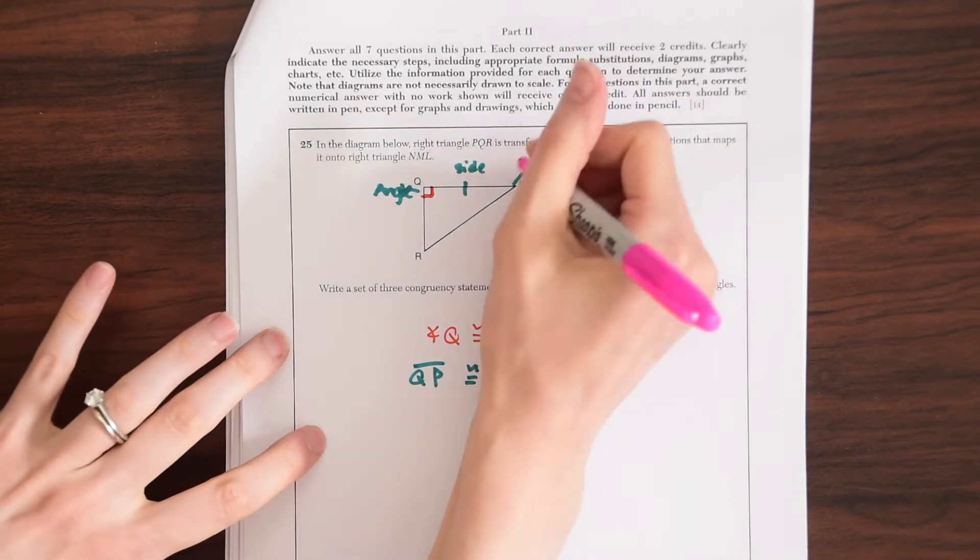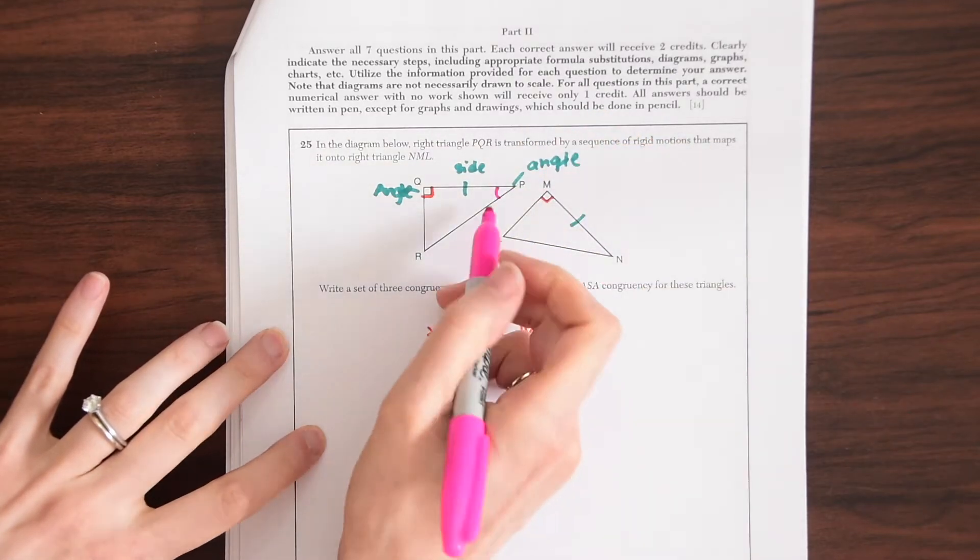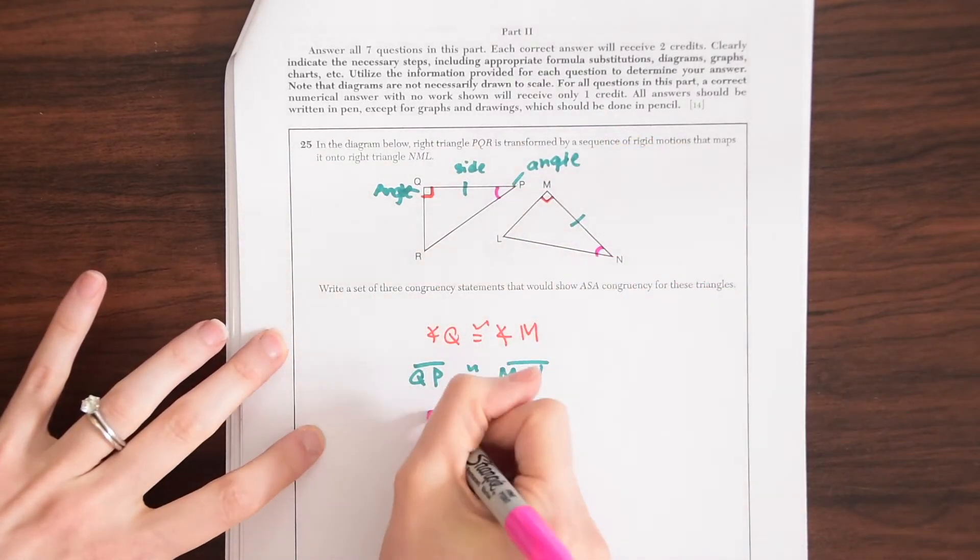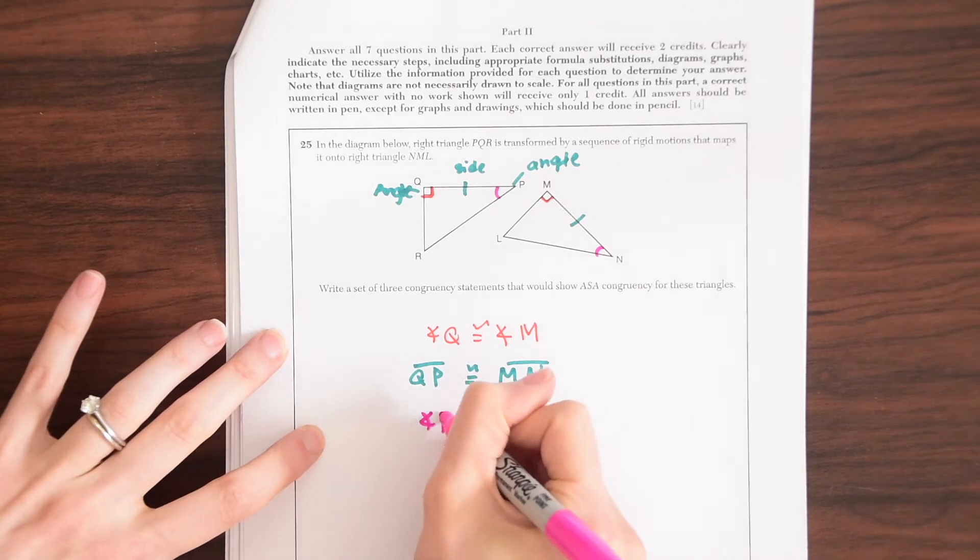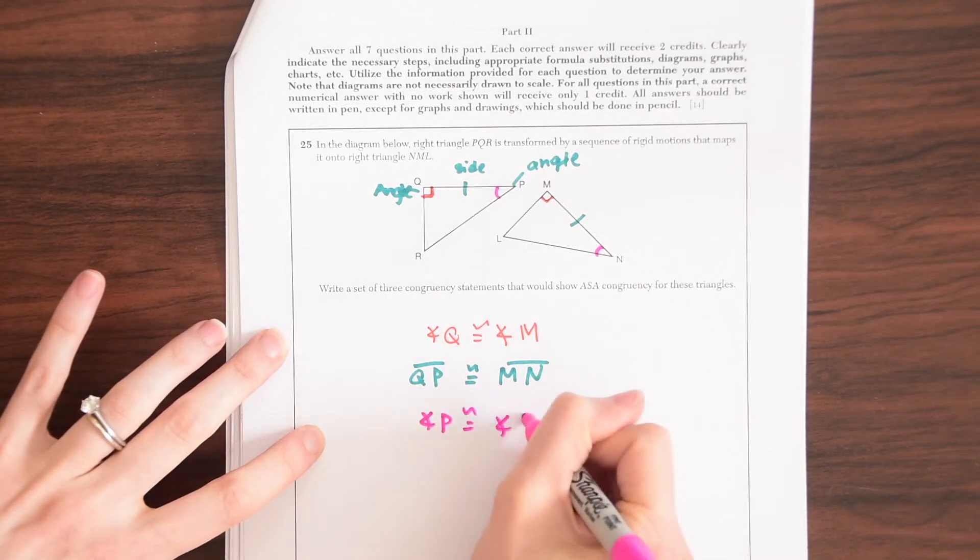So our next angle can be angle P and the corresponding angle can be angle N and here we'll have angle P is congruent to angle N.